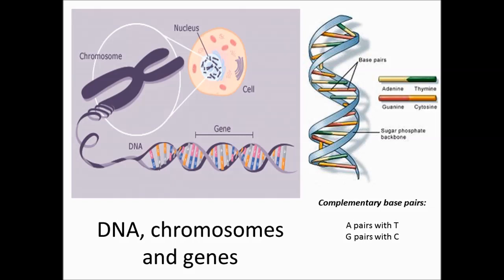DNA, chromosomes and genes. The genetic code is made from DNA, which is found in the nucleus of the cell. DNA forms structures called chromosomes as the DNA coils up to fit inside the cell. In human body cells, DNA is organised into 23 pairs of chromosomes, giving a total number of 46.